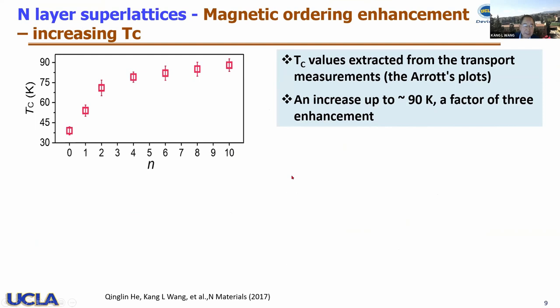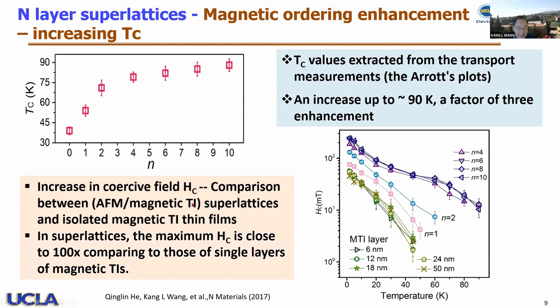We have substantiated this study by looking at the number of layers. Instead of a three-layer stack, I increased the number of layers up to 10, and we determined the Curie temperature by ARPES and showed it increased from 30 K all the way to 90 K — a three-times increase. We also showed the coercive field increases by 100 times as number of layers goes from one to 10. When we instead increase the thickness of a single layer up to 50 nm, the coercive field remains unchanged, confirming the interface plays a critical role.